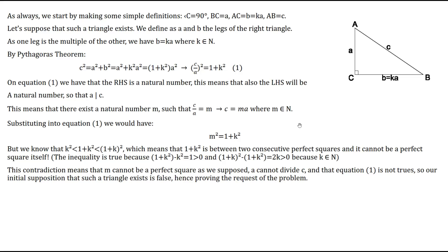But what does this mean? It means that M squared, a perfect square, equals another perfect square plus 1. However, we know that 1 plus K squared is strictly greater than K squared, but strictly less than (K+1) squared. This means 1 plus K squared lies strictly between two consecutive perfect squares, and hence it cannot be a perfect square itself. This inequality holds because on the left side the difference is 1, which is greater than 0, and on the right side the difference is 2K, which is greater than 0 since K is a natural number.